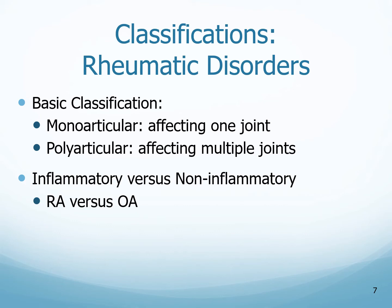The basic classification of rheumatic disorders: monoarticular — mono means one — will affect one joint. Polyarticular — poly means many — is going to affect multiple joints. And then there is inflammatory versus non-inflammatory, and when we are talking about this, we are talking about rheumatoid arthritis versus osteoarthritis.